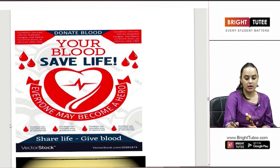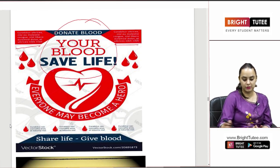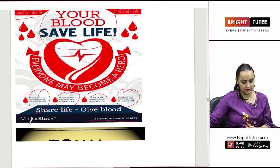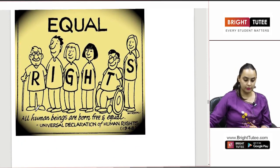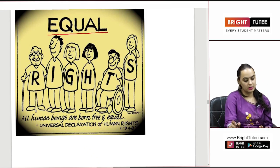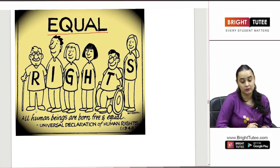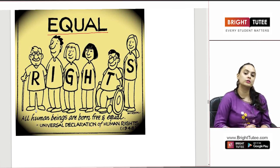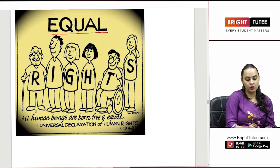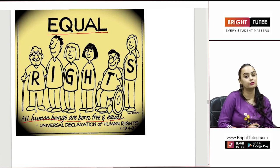Here are a few sample posters. This one is about blood donation — 'Donate blood, your blood can save a life.' In these boxes you can see some important information is given, and at the end comes the name of the organizer or issuer. Then there is a poster about equal rights — beautifully made, showing aged, young, and physically disabled persons to talk about rights. It has a beautiful quote: 'All human beings are born free and equal,' issued by the Universal Declaration of Human Rights in 1948.